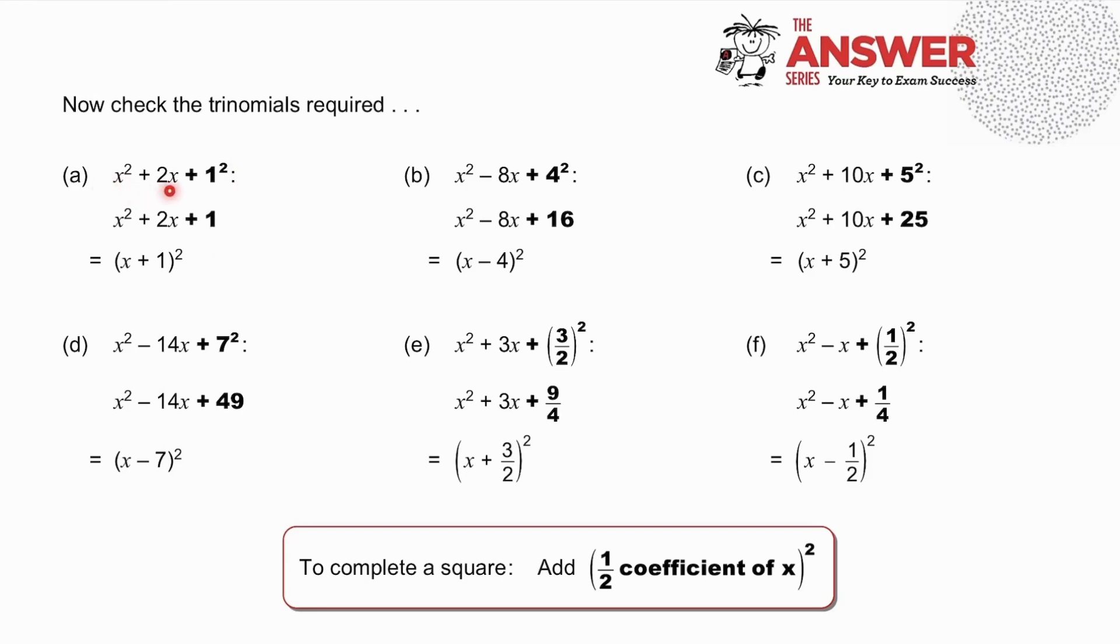If we have x² + 2x, we add half of 2 squared. So the trinomial x² + 2x + 1 yields that square. If we have x² - 8x, we add half of 8 squared. x² + 10x, we have half of 10, which is 5, squared, which we add. Spend time studying all these completions of squares. And note how in each case, what we're adding is half the coefficient of x squared.